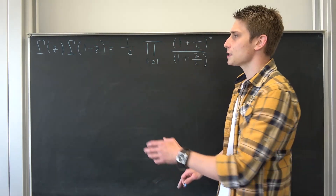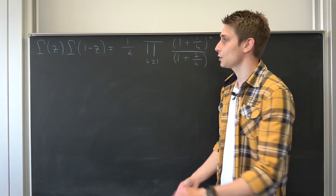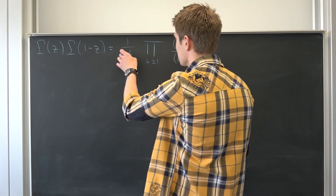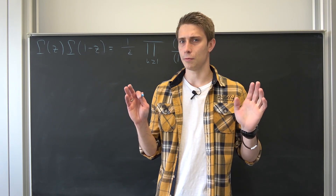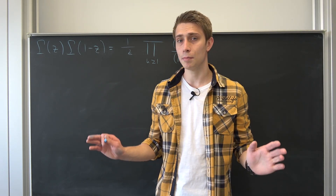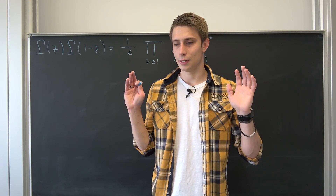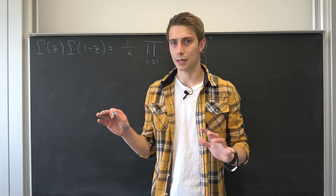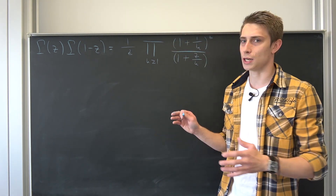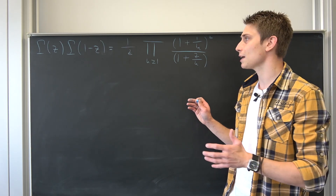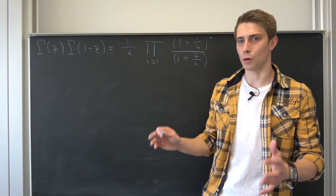This right here is our gamma function. But what is gamma of 1 minus z? Surely you can just plug 1 minus z in as the argument, but you are going to have a really tough time. I tried that before and it's horrible — I really couldn't algebraically manipulate this into what I wanted it to be.